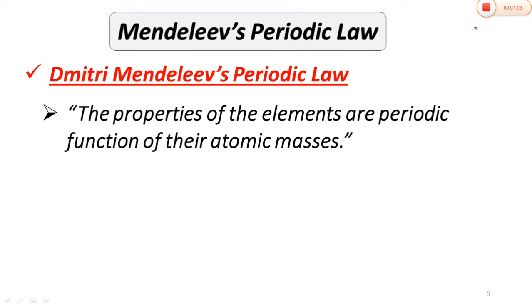First of all we have to see what is the definition of Mendeleev's Periodic Law. There are two ways in which we can define it. The meaning is the same but the words are different. The first way is that the properties of the elements are periodic functions of their atomic mass.